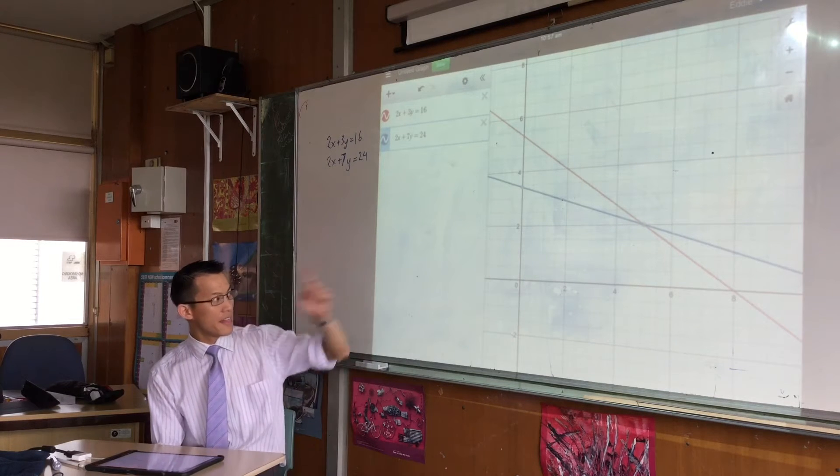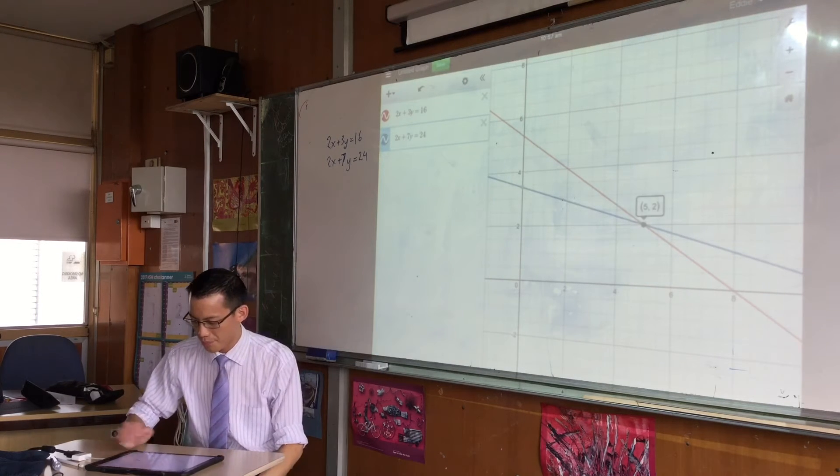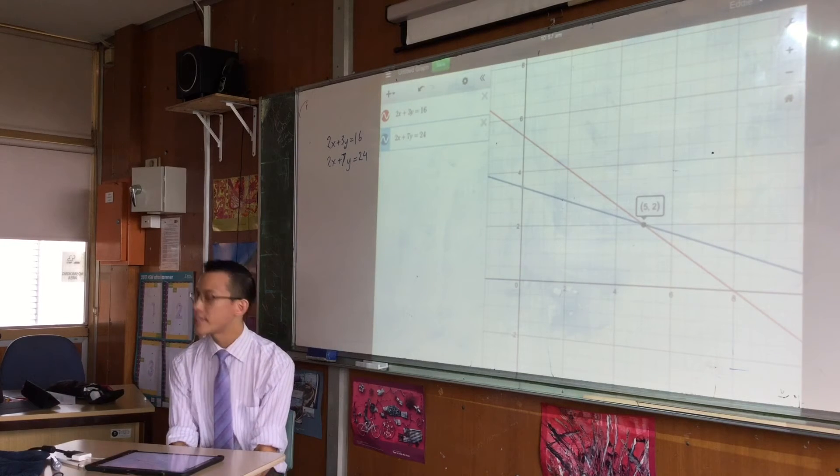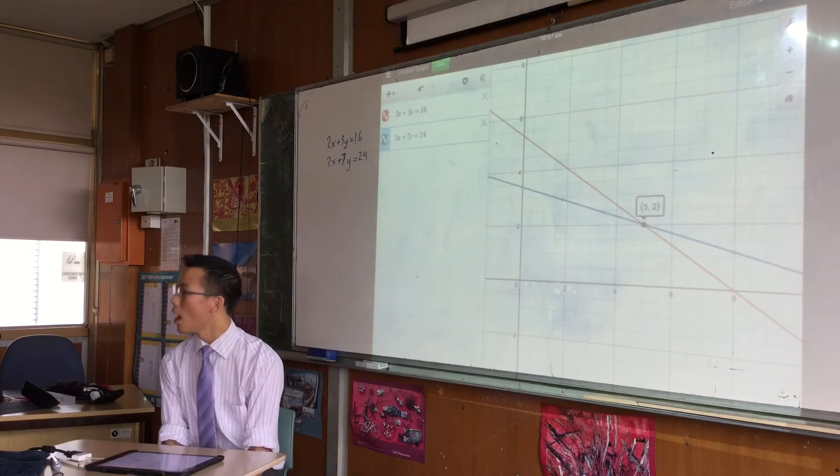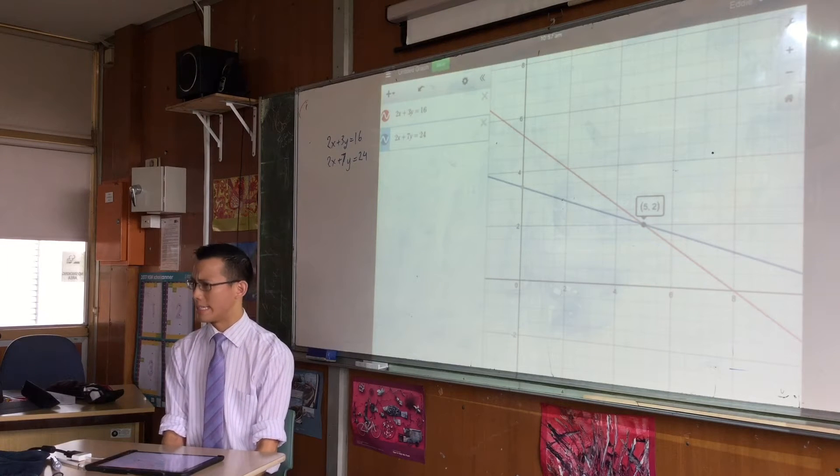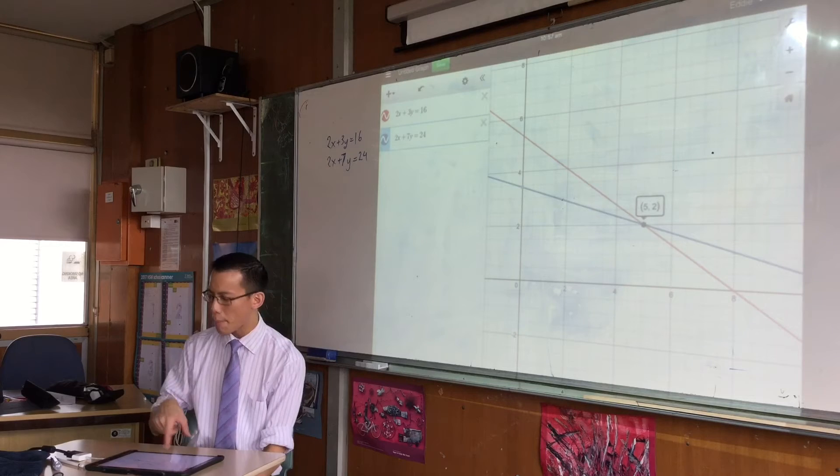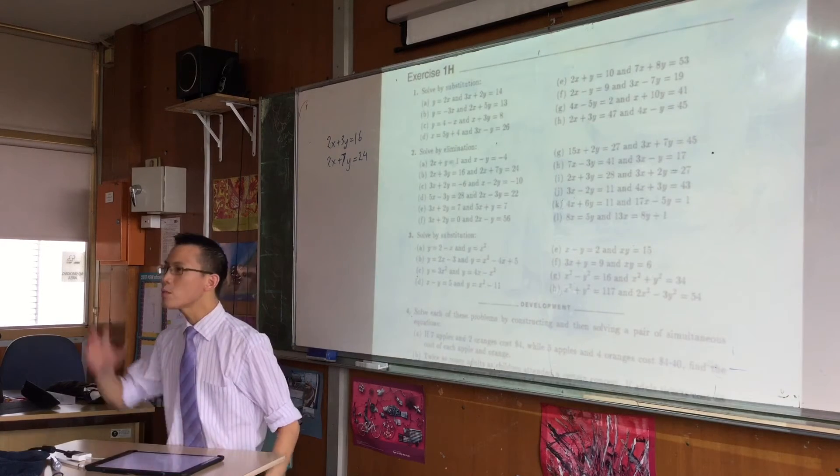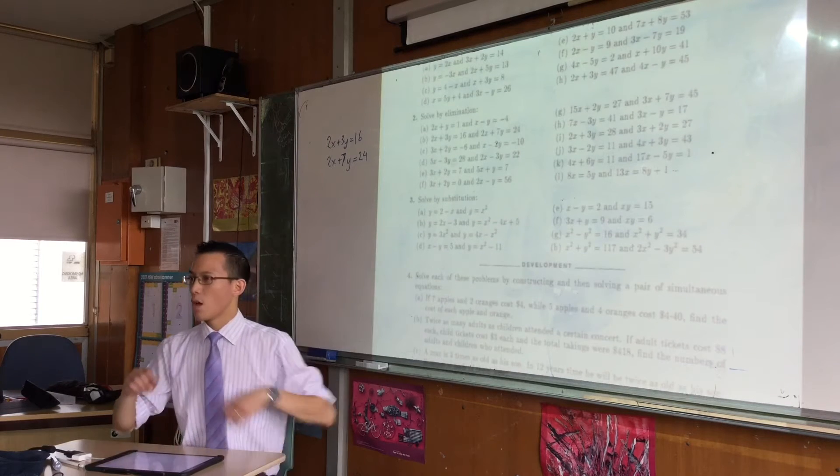That point of intersection over there, if you click on it or even mouse over, you'll see the coordinates. This tells you that the solution will be x equals 5, y equals 2. And you may well have already done this question this morning and you're like oh I remember this one, it's quite easy to see.